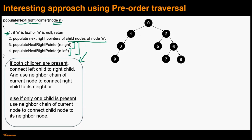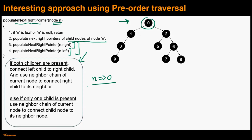Let's understand the intuition behind this algorithm using this example. The execution starts from root node 0. The very first call to this subroutine is made with argument node 0. The first step checks if n is leaf or null — node 0 is neither, so this base case has no effect.